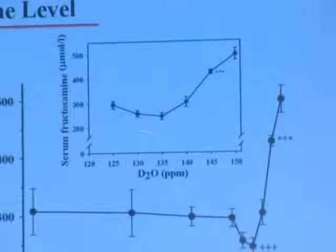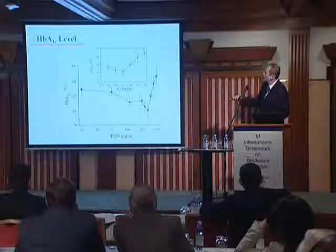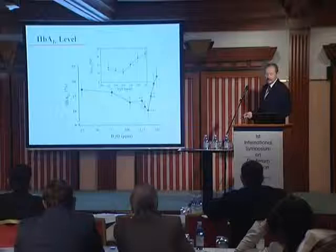If we check the hemoglobin A1c level, very similarly, not the lowest dose, not the highest dose, but around 100–135 ppm was the optimum of this concentration.